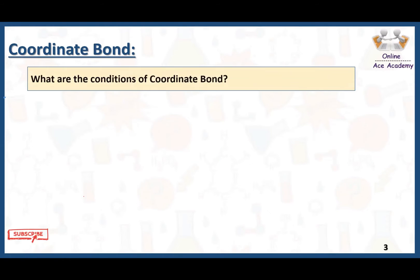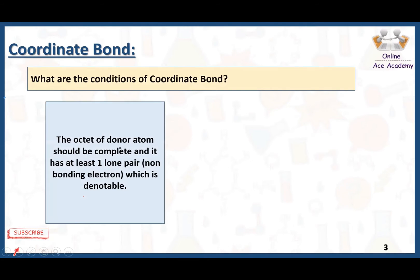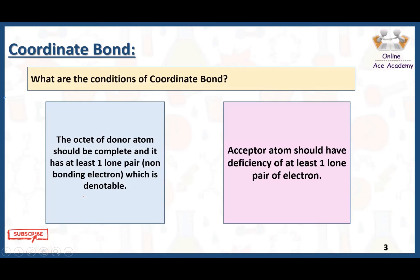There are two conditions for the formation of a coordinate bond. One atom acts as the donor atom and the other as the acceptor atom. The donor atom should have a complete octet and at least one lone pair that is donatable. The acceptor atom should have a deficiency of at least one lone pair of electrons — it needs two electrons to complete its octet.